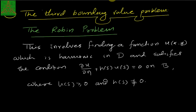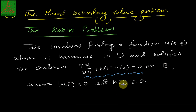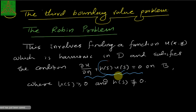The third type is known as the Robin's problem. The Robin's problem is also finding u which is harmonic on the interior of a simple closed smooth curve, satisfying the condition ∂u/∂n + h·u = f on the boundary, where h is a positive, entirely non-zero function. If h were zero it would reduce to a Neumann problem; Robin's problem has this extra term added.